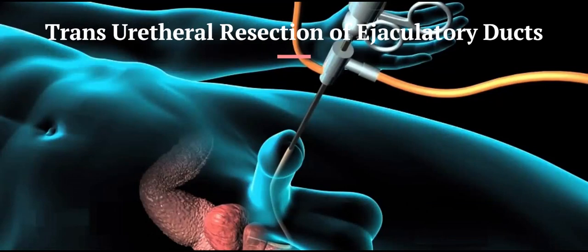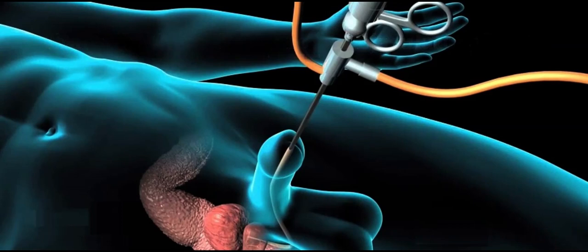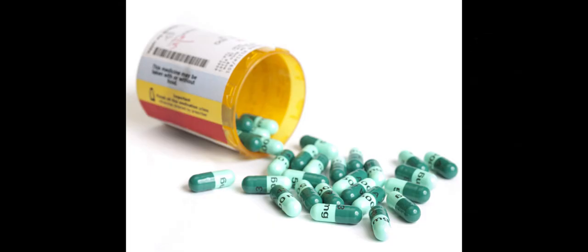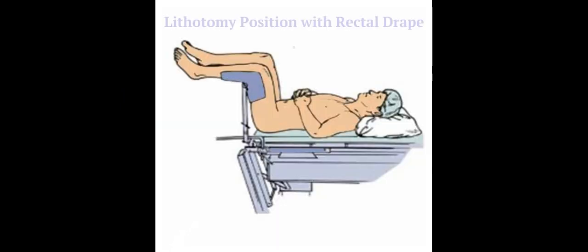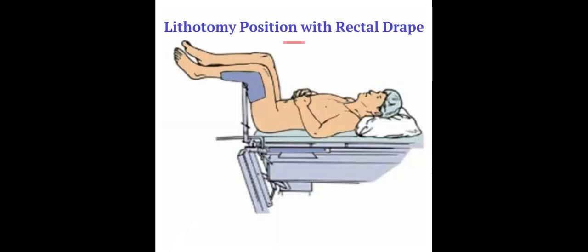Transurethral resection of the ejaculatory ducts is performed in the outpatient setting. Following the administration of light general or regional anesthesia and a single dose of a broad-spectrum antibiotic, the patient is placed in the dorsal lithotomy position with a rectal drape.